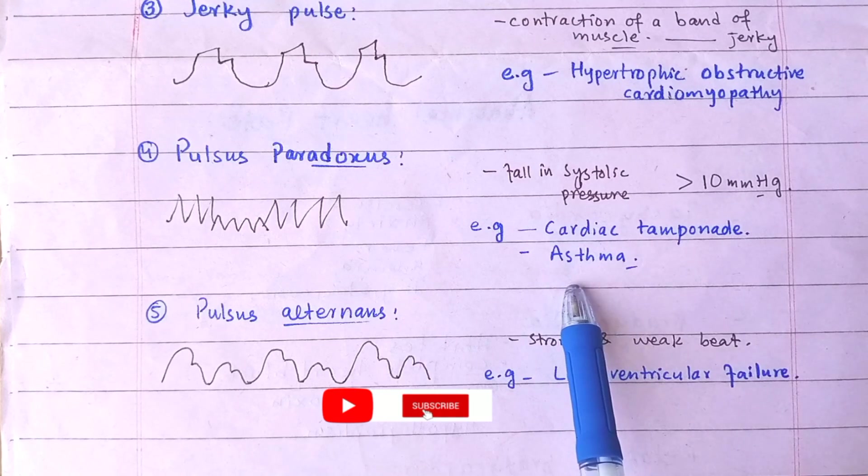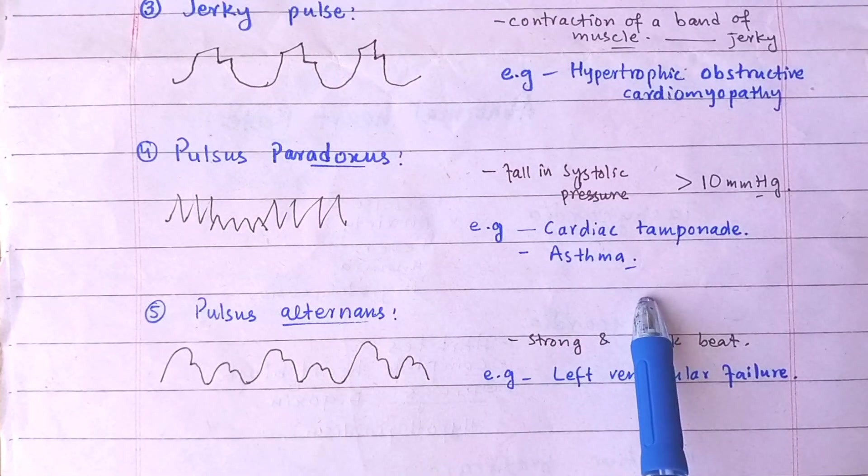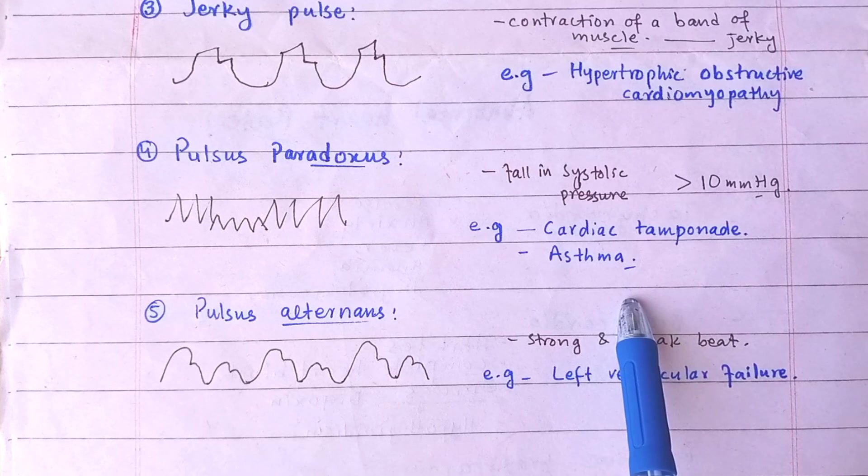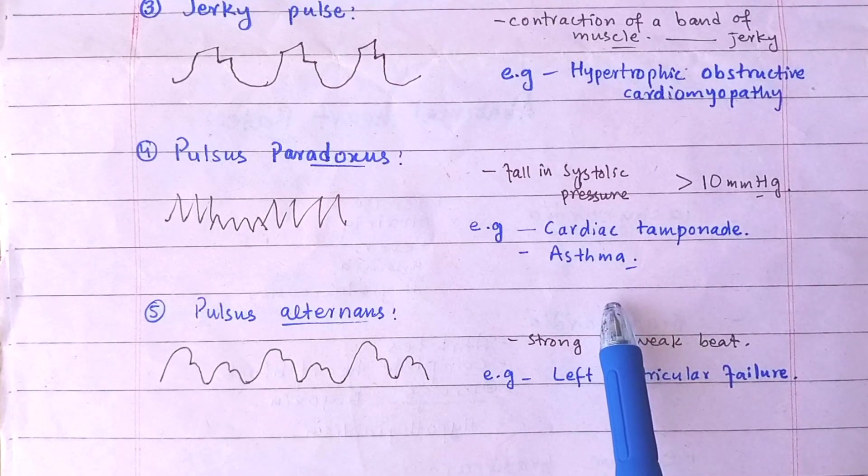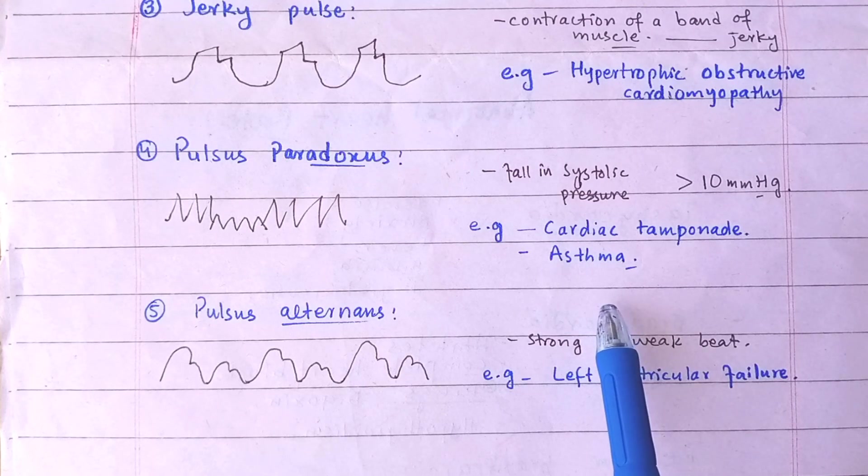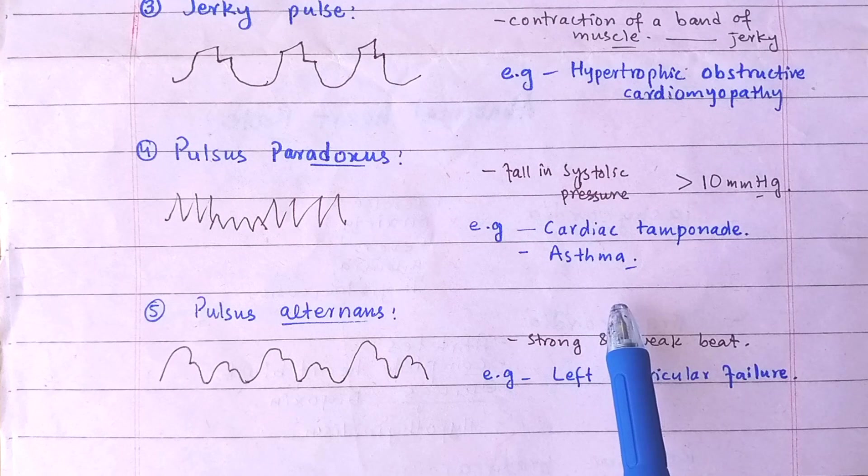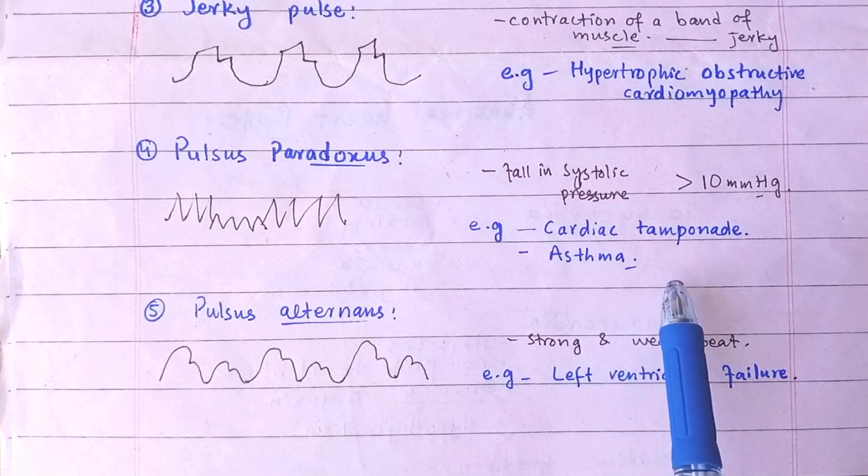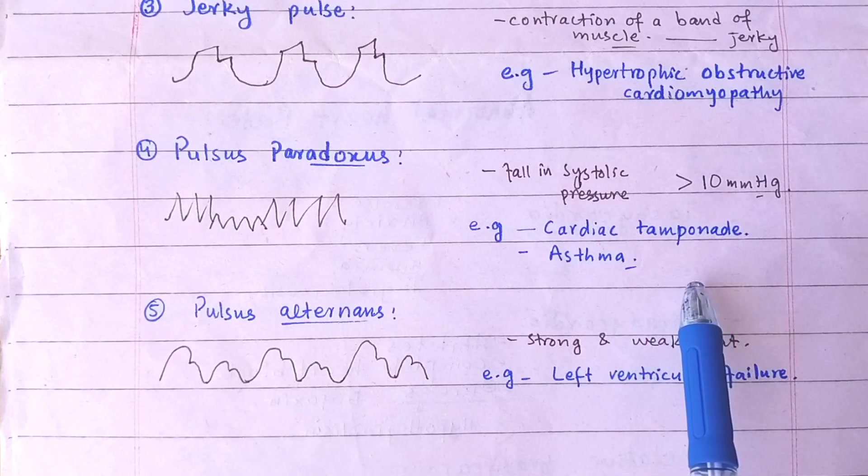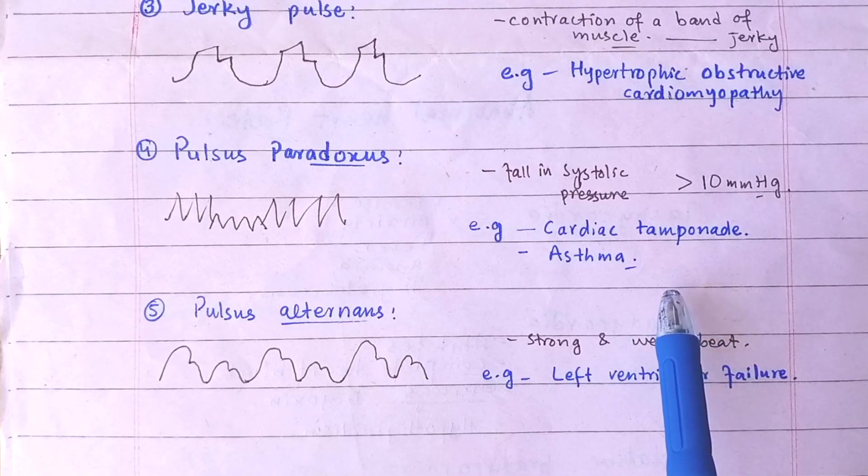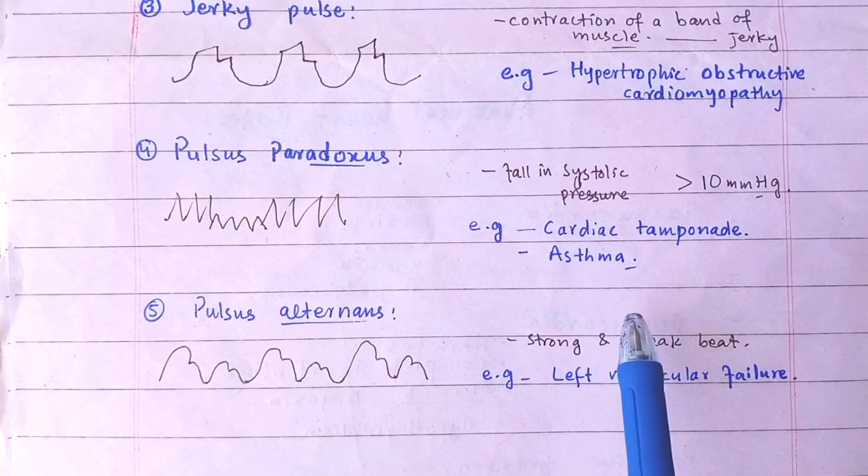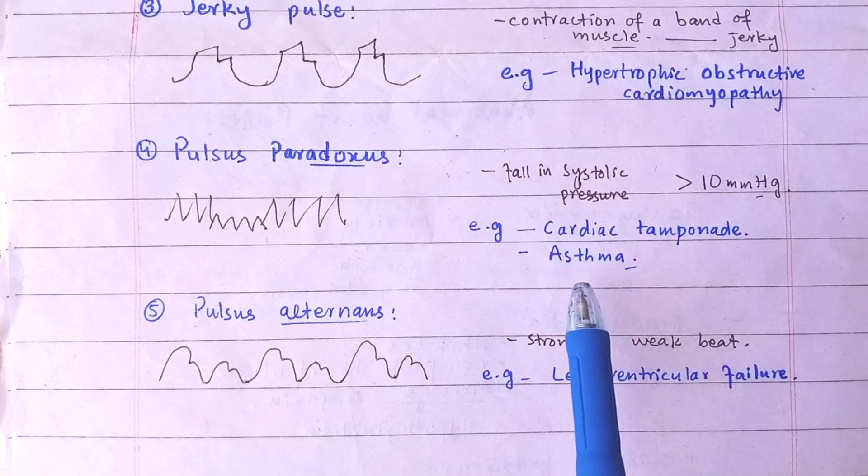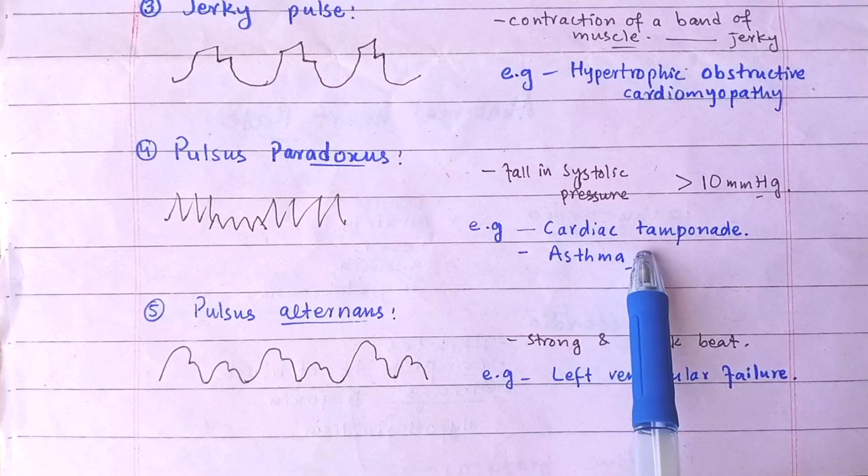Pulsus paradoxus can be confirmed by checking the blood pressure during inspiration and expiration. For this, ask the patient to breathe quickly. Inflate the cuff above systolic level and then deflate it gradually. Note the level at which Korotkoff sounds first appear. These will be audible during expiration only. Continue deflating the cuff till the sounds remain audible throughout respiratory cycle and note this level as well.